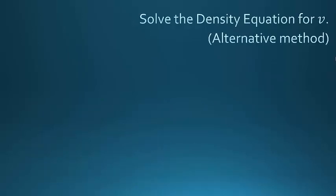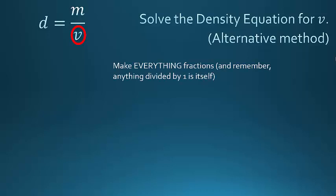However, there is an alternative way of solving this equation. Either one will work. We have our equation, and we're still solving for V. But now what I'm going to do is make everything fractions. So before I got rid of my fractions, now I'm going to make everything fractions. Well, the right-hand side of the equation already was a fraction. But the left-hand side, instead of D, I'm going to write it as D over 1. Because again, D divided by 1 is still just equal to D.